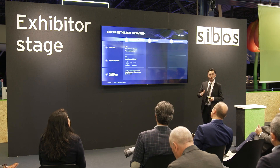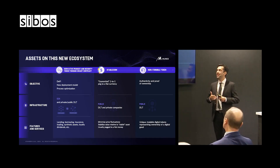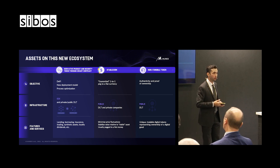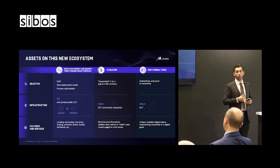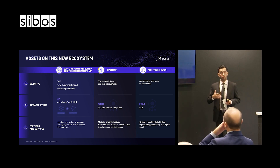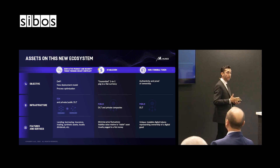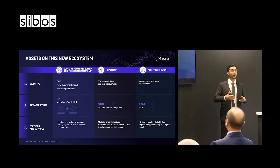Since 2020 we've seen the rise of the stablecoin — a one-to-one peg to a fiat currency. It was used in decentralized finance to provide an asset that minimizes price fluctuations. It stabilizes value relative to a stable asset, usually a fiat currency, but could be a basket of assets. Today we mainly have stablecoins pegged to the US dollar, but we've seen Swiss franc and others. They are mainly issued on public DLTs by private companies, with the pegging mechanism managed by a centralized organization.